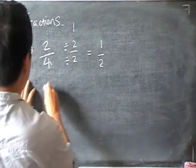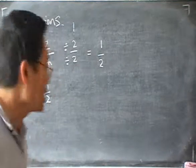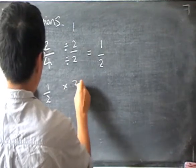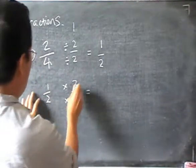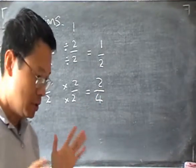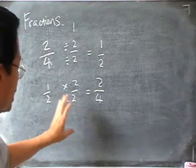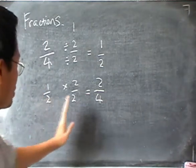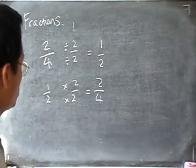In the same way, if I have one half, I can also multiply the top and bottom by the same number to change it into another form. If I do times 2 on top and times 2 at the bottom, I will get back 2 over 4. The important thing to remember is the reason why we can do this is because 2 over 2 is 1. And when you multiply anything by 1, the answer should be the same. So even though 2 over 4 looks different from 1 over 2, they are equal.